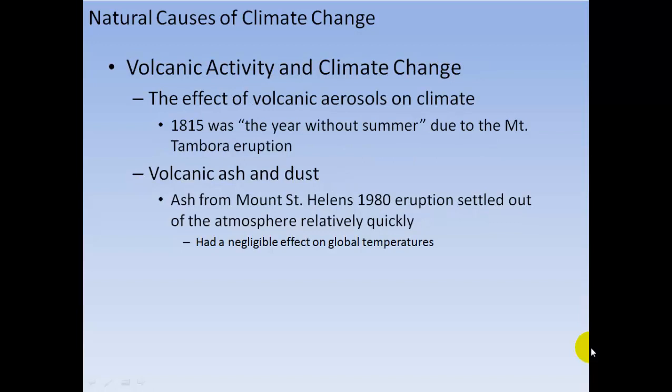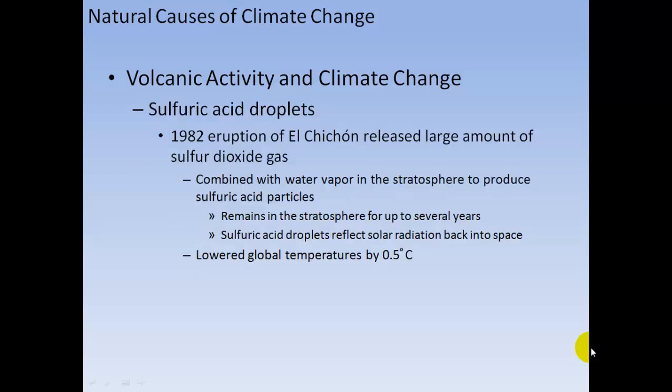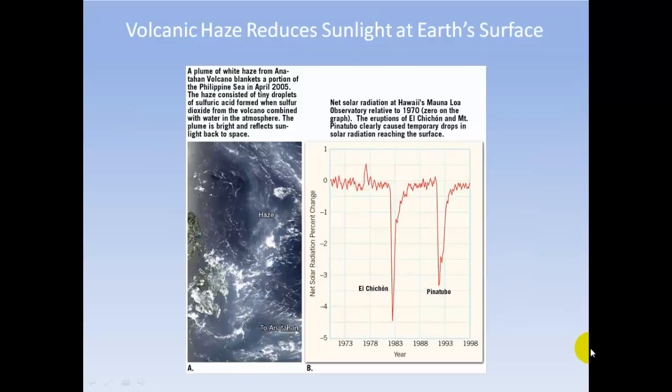Volcanic activity and climate change: the 1815 Mount Tambora eruption caused the 'year without a summer.' Volcanic ash and dust from Mount St. Helens' 1980 eruption cleared out of the atmosphere relatively quickly and had negligible effects on global temperatures. The 1982 eruption at El Chichón released large amounts of sulfur dioxide and water vapor, producing sulfuric acid particles in the stratosphere that remain for up to several years. These sulfuric acid droplets reflect solar radiation back into space, lowering global temperatures by almost half a degree Celsius. After El Chichón and Mount Pinatubo, there was reduced sunlight at Earth's surface in the following year.